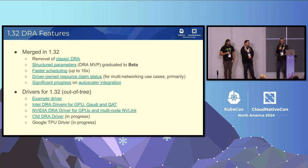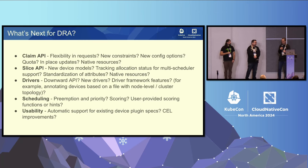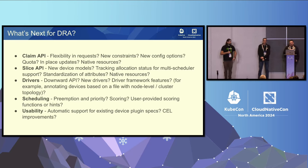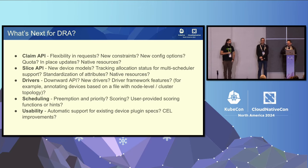The out-of-tree part is that we need DRA drivers, because without drivers DRA doesn't do anything. We have an example driver that we update as a reference for potential DRA driver developers, like the Intel DRA drivers and the NVIDIA DRA drivers. Both drivers are currently based on the 1.31 alpha API and still need to be updated to support beta. There's no good way to support alpha and beta in the same driver, but that pain is going away as soon as we all focus on the beta API.